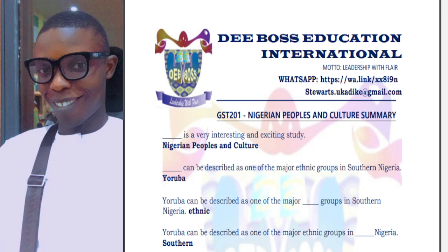Everything you need to know about these groups — just for you to know and understand what different parts of people in Nigeria look like. And it's one of the easiest courses when it comes to passing, like GST-201, one of the courses that students pass most compared to other GST courses.